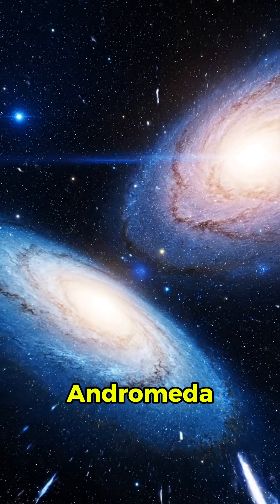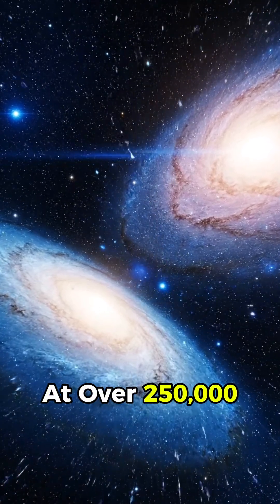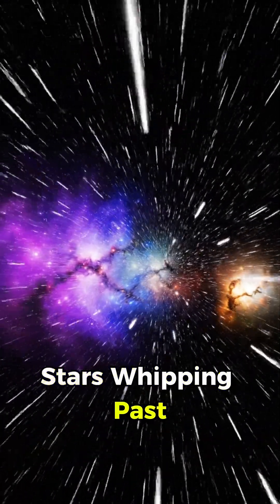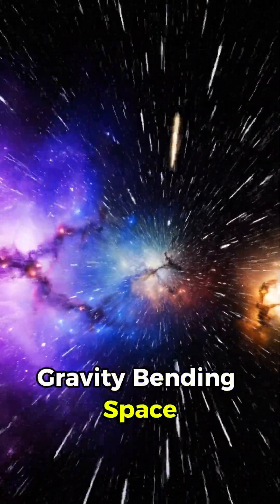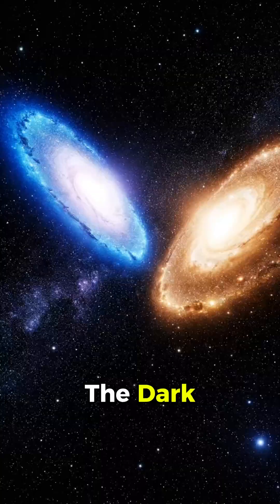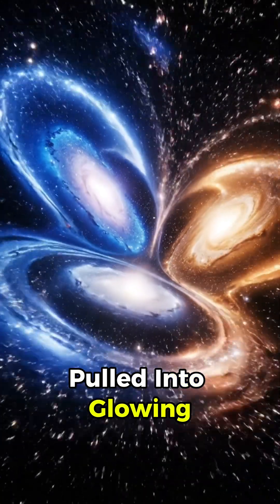The Milky Way and Andromeda slamming toward each other at over 250,000 miles per hour. Stars whipping past like cosmic fireworks, gravity bending space like taffy, entire solar systems getting flung into the dark, while others are pulled into glowing rivers of light.